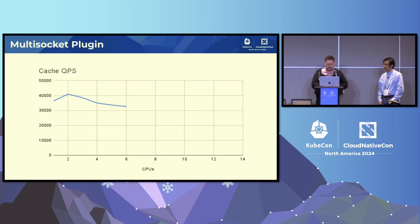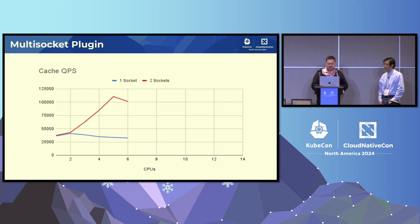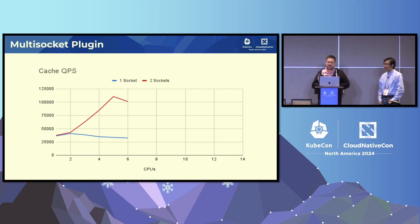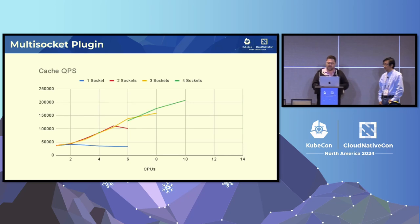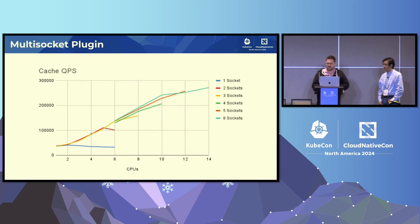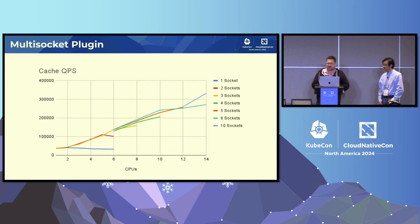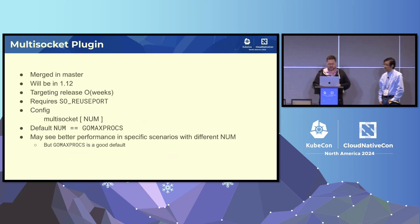With the multi-socket plugin with the number of sockets set to one, you see exactly the same performance as before. With two sockets, we scale pretty well up until five CPUs, then we drop off at six CPUs — hitting that contention. With three sockets, we're looking at a close to linear progression. Four sockets, five sockets, eight sockets, all the way to ten sockets — it's almost linear. What this means is that one CoreDNS process, one instance running on one machine, given 14 CPUs, can do 350,000 queries per second. That's a pretty good rate and we're pretty proud of that.